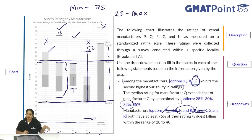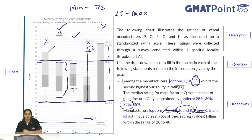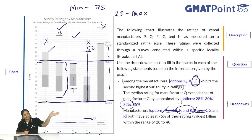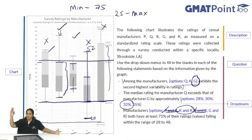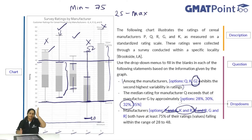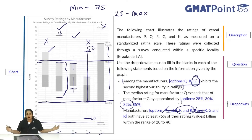So the three answers are: G for second highest variability, 32% for the median difference, and K and R for the pair with 75% of ratings in the range 28 to 48. To answer questions based on a box and whiskers plot, you must understand what each level represents: minimum (0th percentile), 25th percentile (bottom quartile), median (50th percentile), 75th percentile (top quartile), and maximum (100th percentile).